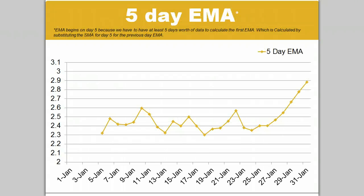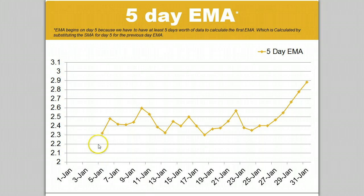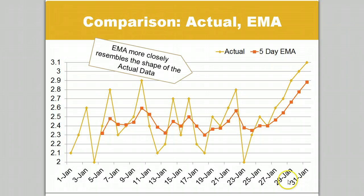Let's look at the data on the graph. The five-day EMA begins on day five, because we don't have enough data to calculate it before then. Day five's EMA is calculated using a five-day SMA in lieu of the previous day's EMA. We can see that the EMA graph looks like a cross between the actual data and SMA. Comparing the EMA and the actual data, we see that the EMA line more closely resembles the shape of the data than the SMA, more accurately representing the rate of change.